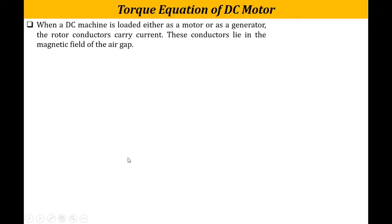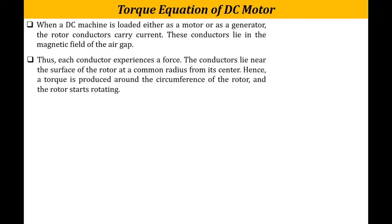Whenever a DC machine is loaded either as a motor or a generator, the rotor conductors carry a current. These conductors lie along the surface of the rotor and lie in the magnetic field of the air gap. Therefore each conductor experiences a force. The conductors lie near the surface of the rotor at a common radius R from the center, so torque is produced around the circumference of the rotor and the rotor starts rotating.